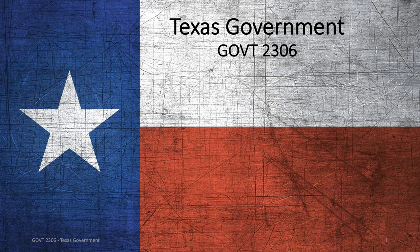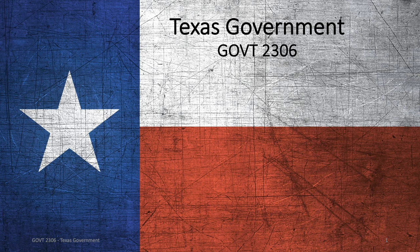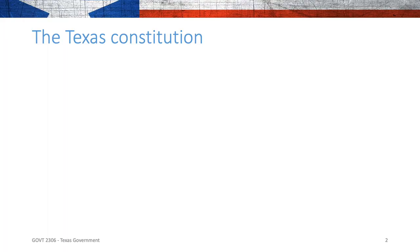Welcome to Unit 3, Lesson 1 in Texas Government. This is a chapter over the Texas Constitution. The Texas Constitution is one of my favorite things to talk about — it's a very specific set of rules, and it has evolved to show how Texas has evolved over the years. We will talk about history, provisions in Texas law, and a broad overview of the three branches of government. Lessons 2, 3, and 4 cover the specific branches.